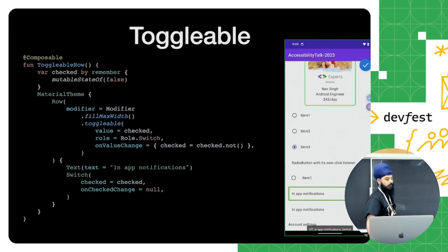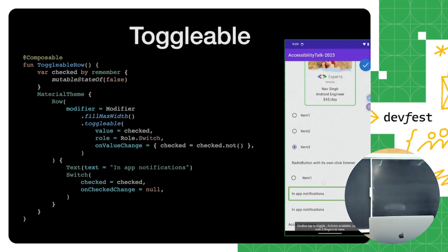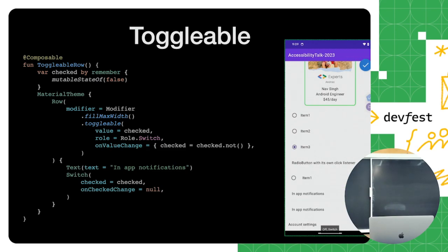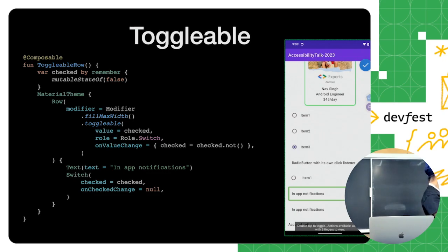The next is `toggleable` — for switches. Instead of selectable, use the toggleable modifier, providing the same info: what to do on value change. We set the switch's `onCheckedChange` to null so the system knows the row is handling all clicks. Now it says 'in-app notifications' altogether — without this, it would read 'in-app notifications' then pause and move to the switch separately and say 'select or perform action,' which is totally misleading to the user.